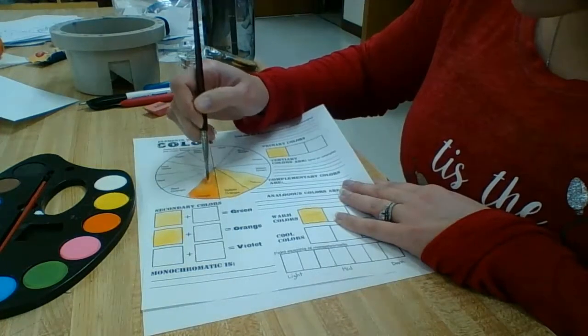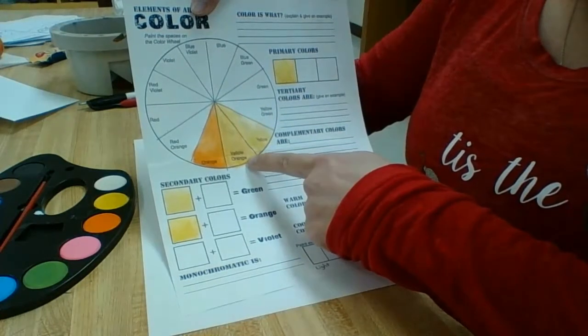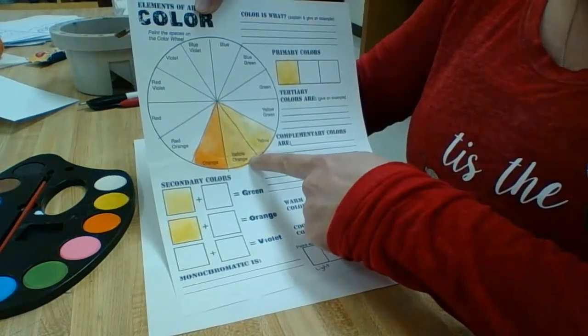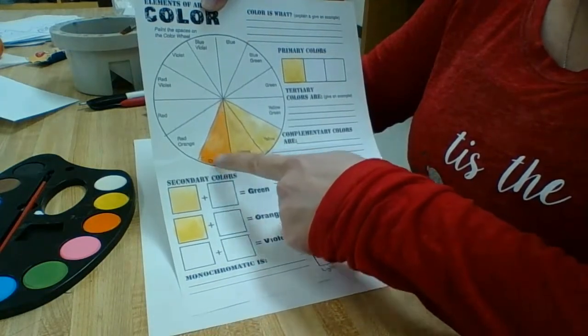Always start with the lighter color when you put it down on your paper. So I started with yellow here and then I added the orange on top, but only a little bit of orange. So I got my yellow, yellow-orange, orange.